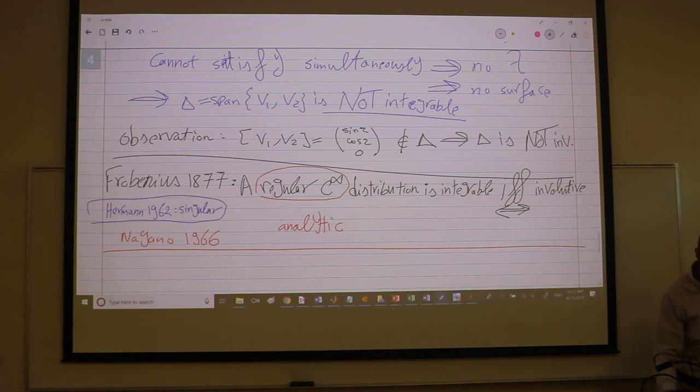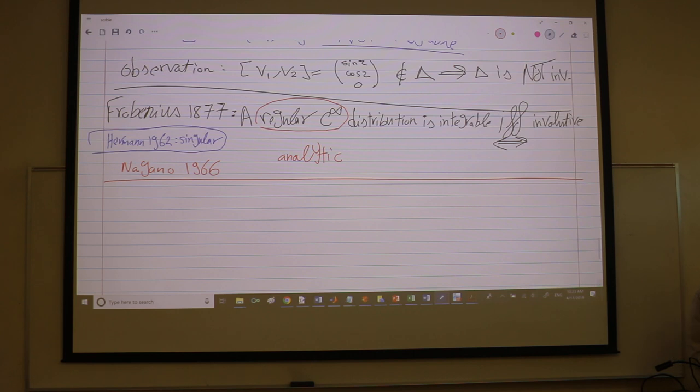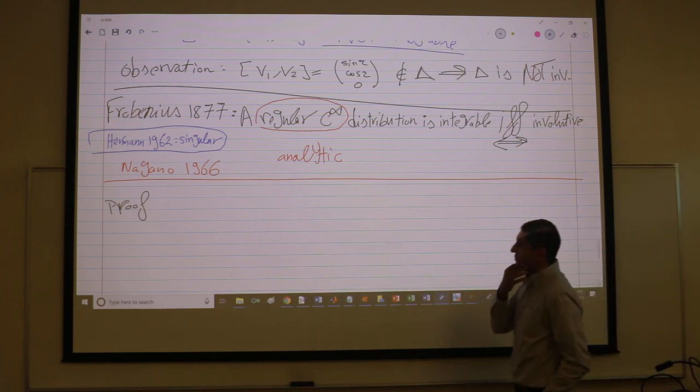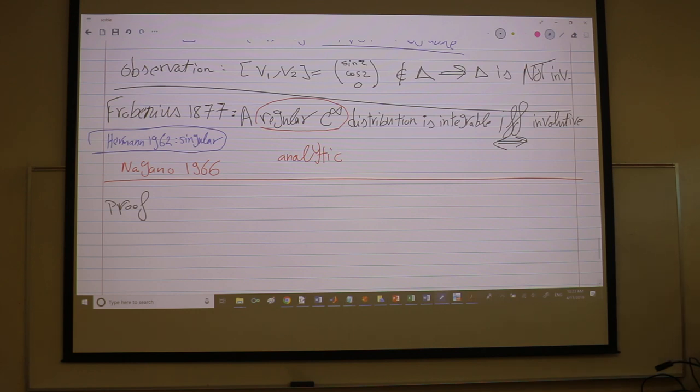So let's ponder a little bit on this guy, on this Frobenius. So actually the proof of Frobenius, you know it's if and only if. Typically, usually in mathematics when you prove an if and only if condition, one way is easy and the other is hard. So I'll prove the easy one for you.